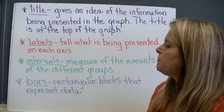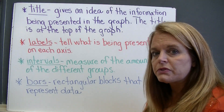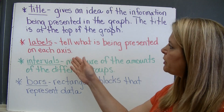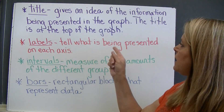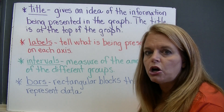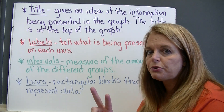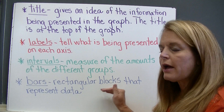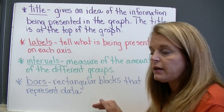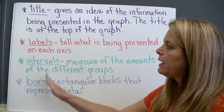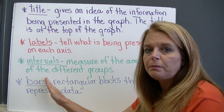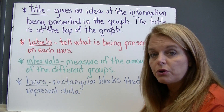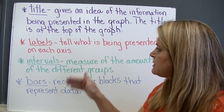The next thing we need to know about are the labels that you put on a bar graph. These are simply words that are written to tell us what is being presented on each axis. Remember there are two axes. One goes across and will have a label telling you what that is, and there will also be a label on the vertical part. So the labels are the words that are on each axis.